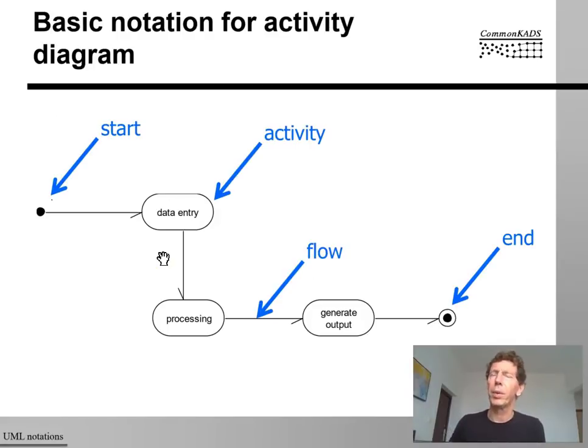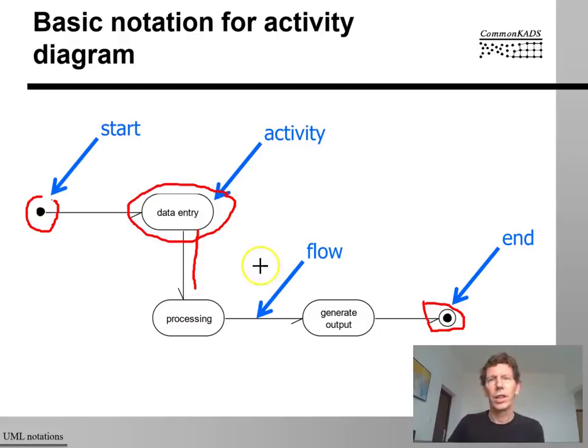So here's a very simple activity diagram. An activity diagram always has a starting point and it must have an ending point. These are the notations for that. And in between starting and ending point, there are activities. And these activities are connected by flows. So that's a very basic structure of a diagram.